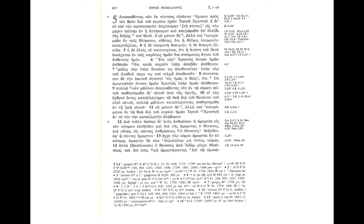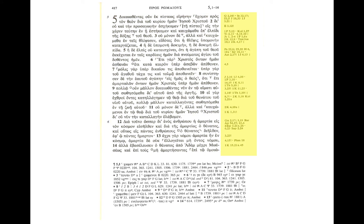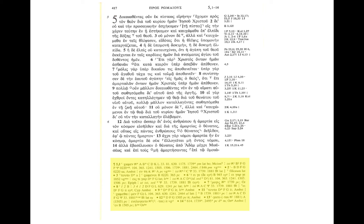Just as with Biblia Hebraica Stuttgartensia — BHS from last week, the Hebrew text — you have the main body, which is the text itself, the Greek New Testament text. Here we're in the book of Romans. In the margin we have notes, which are references to parallel passages or to passages that have similar topics or ideas, just as a cross-reference. And then down at the bottom, yet again, we have our apparatus. Just as with the Hebrew Bible, we want to compare the text in the main body to the variants found down in the apparatus.